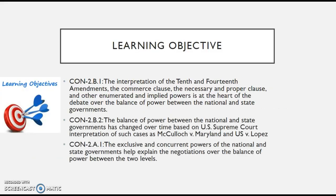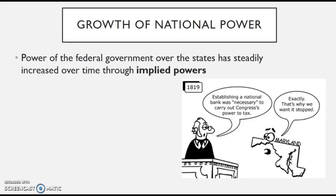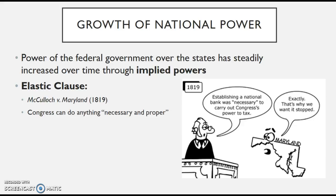Over time, it's important to note that national power — in particular the power of the federal government over the states — has steadily increased through implied powers. If something is implied, that means it's not explicit; it's interpreted. One of the earliest game changers leading to the growth of the national government is the Elastic Clause, which means Congress can do anything it deems necessary and proper.